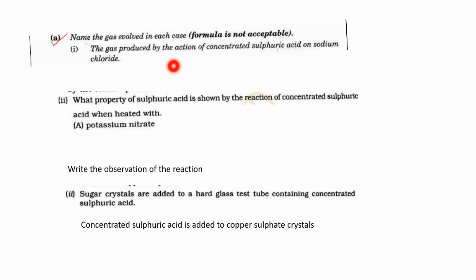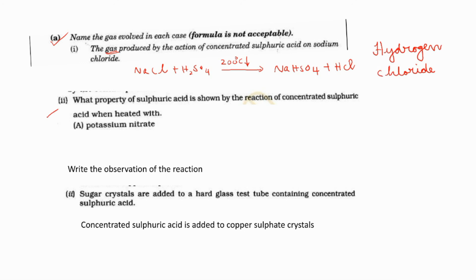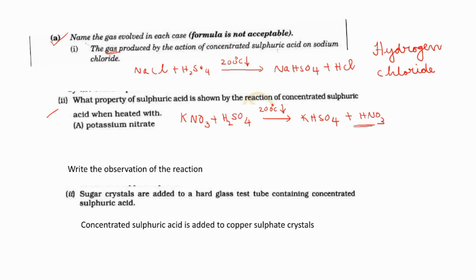Question: Name the gas evolved in each case — formula not acceptable. The gas produced by the action of concentrated sulfuric acid on sodium chloride, with the mixture not heated above 200 degrees Celsius: the product is sodium bisulfate and the gas produced is hydrogen chloride. Question: What property of sulfuric acid is shown by the reaction of concentrated sulfuric acid heated with potassium nitrate, not above 200 degrees Celsius? Products are potassium bisulfate and nitric acid. The property is the non-volatile acid property of concentrated sulfuric acid.